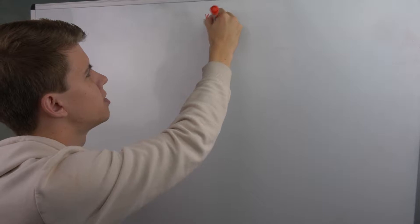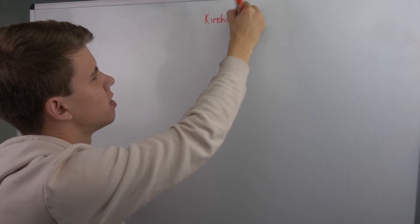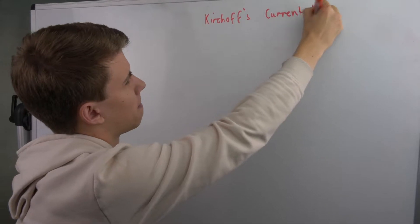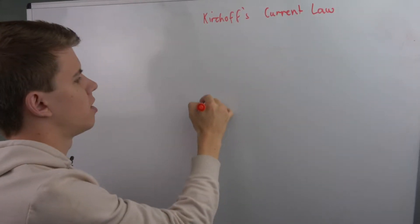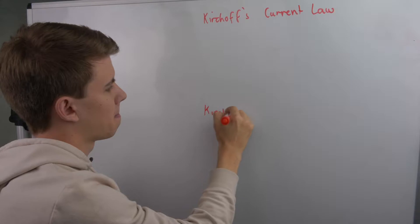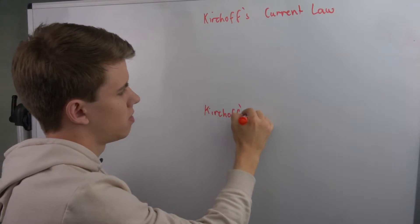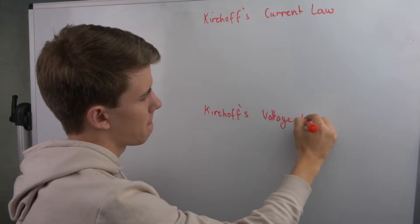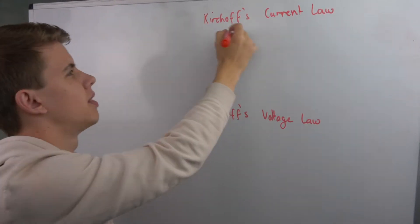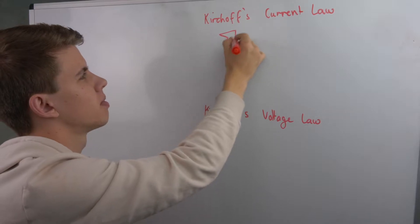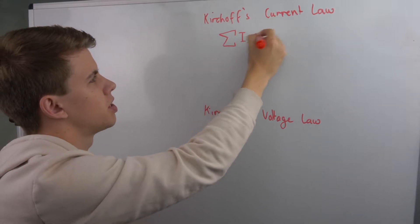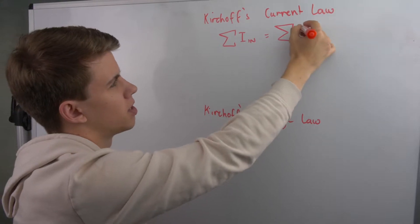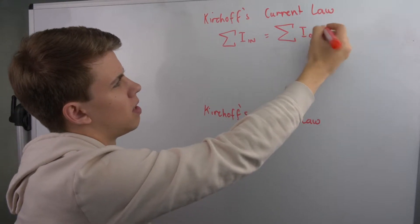Kirchhoff can be split into Kirchhoff's current law and Kirchhoff's voltage law. Kirchhoff's current law says that the sum of all currents going into a junction must be equal to the sum of all currents coming out of the junction, which is a very wordy way to put it.